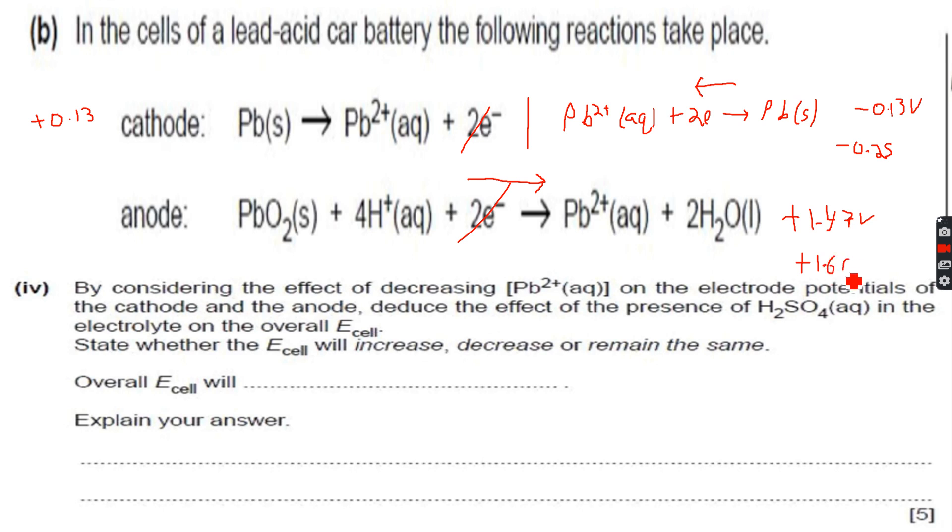So here, first, in the cathode reaction, it became more negative. In the anode reaction, it became more positive. So when we calculate overall, we'll have to flip. So as we flip, this will become plus 0.25. And this will remain plus 1.60. And when we add these together, we get plus 1.85.